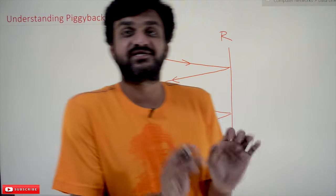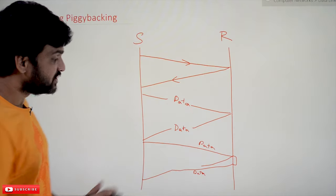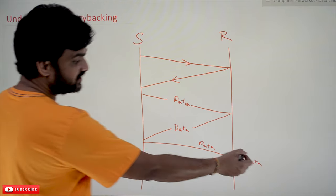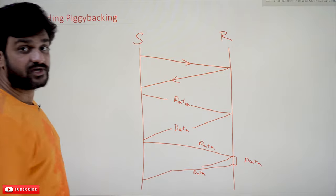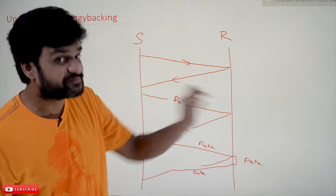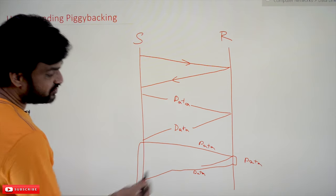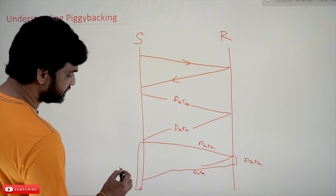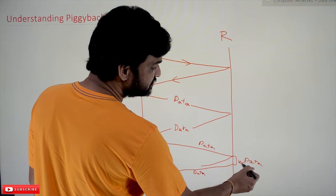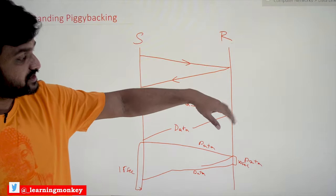However, there is a disadvantage. How long does the sender have to wait? For example, if the sender has sent data but the receiver has no data packets of its own to transmit, the receiver cannot wait indefinitely. It will wait for a specific period of time — less than the sender's timeout period. For example, if the sender's timeout is 15 seconds, the receiver will wait about 10 seconds.